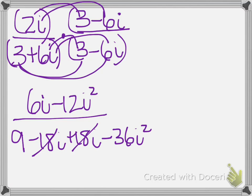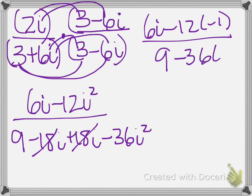So now the other thing to remember is i squared is really negative 1. So I'm not going to have an i in my denominator. This is why this works so well. So that gives me 6i minus 12 times negative 1 divided by 9 minus 36 times negative 1.